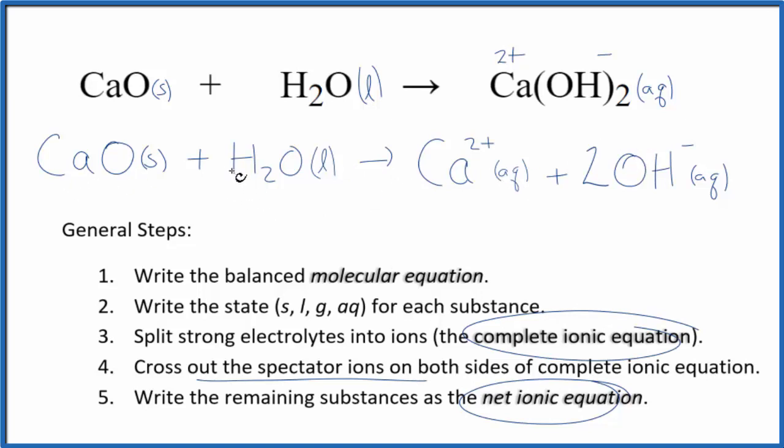If you look at charge, you'll see that that's balanced. Over here, everything is neutral, and here we have two plus and a two times the one minus, so two minus, two plus two minus. That gives us a net charge of zero. So charge is balanced. If you count the atoms up, they're balanced as well.